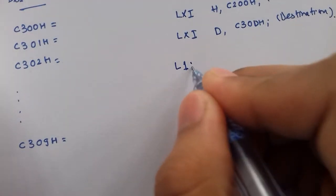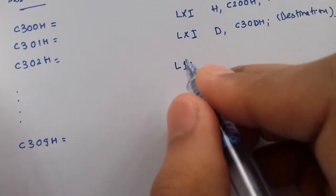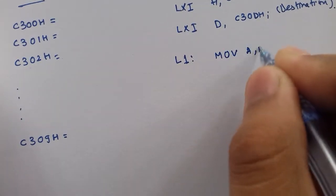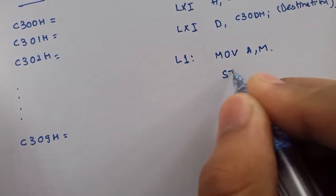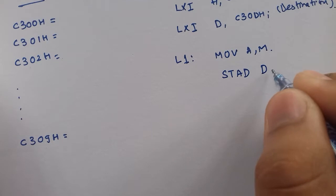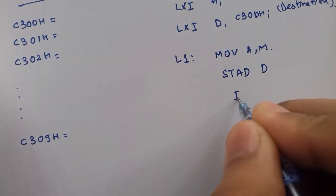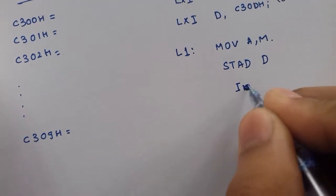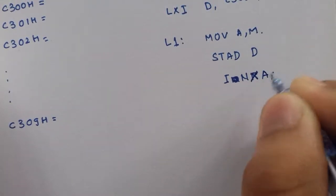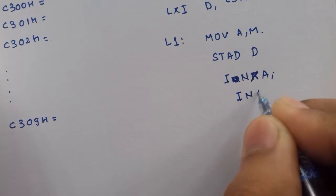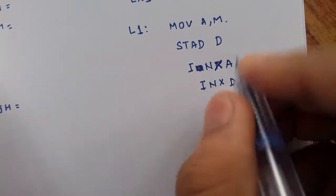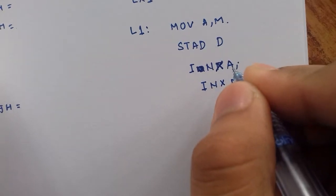We have to loop the instruction, so we use a label. What we do is we move the content of memory to accumulator. We copy the content of accumulator to the register pair denoted by D. We will increase the value of HL and we will increase the value of DE. This will increase register pair DE, and this will increase another pair.